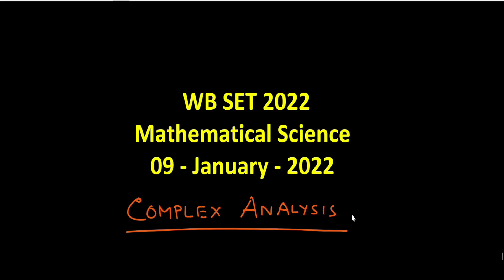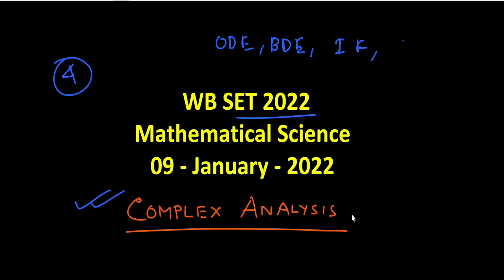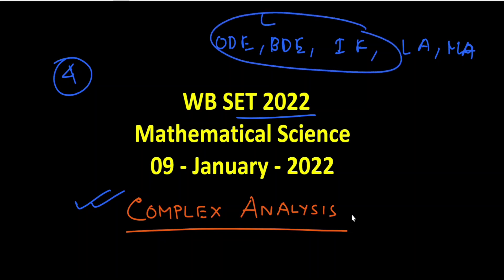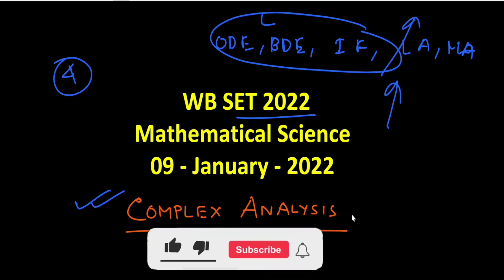Hello everyone, welcome back to my channel Math with Smart Tips. Today in this video we are solving questions from Complex Analysis of WB SET 2022 Mathematical Science. This is the fourth video of the WB SET 2022 Mathematical Science solution series. In the previous three videos we already solved questions from ODE, PDE, integral equations, linear algebra, and modern algebra. This video also contains Laplace transform and Fourier transform. Those who are new, please check the links in the description. Please like the video, comment if you have any doubts, subscribe, and share with your friends.